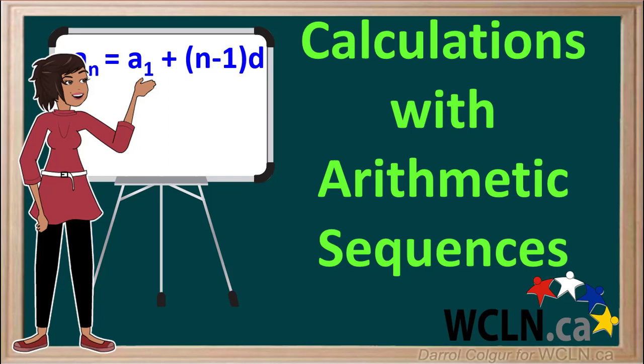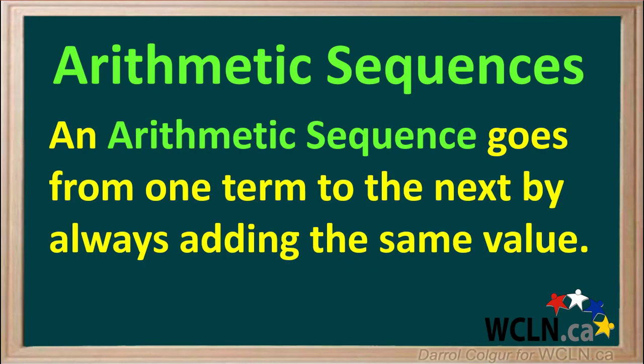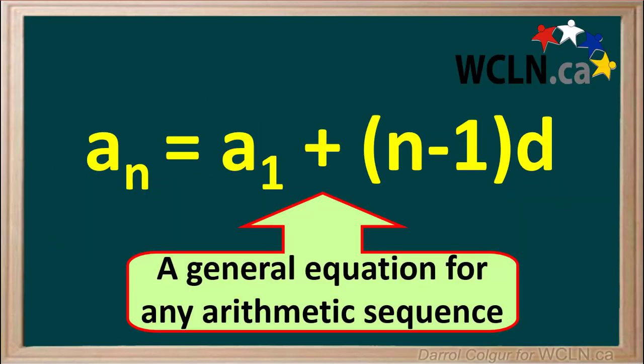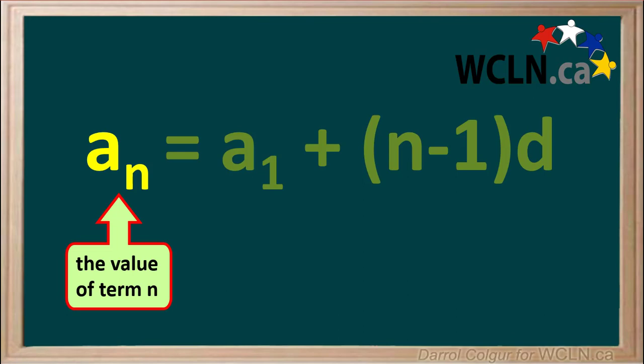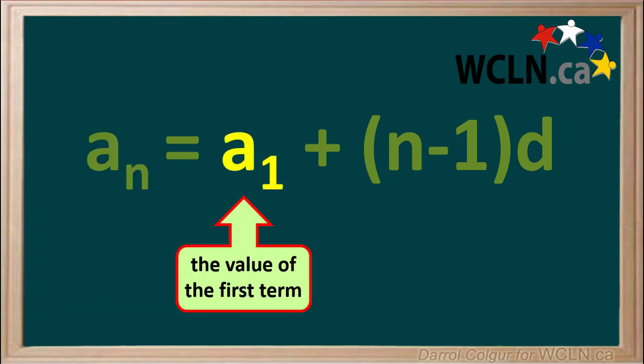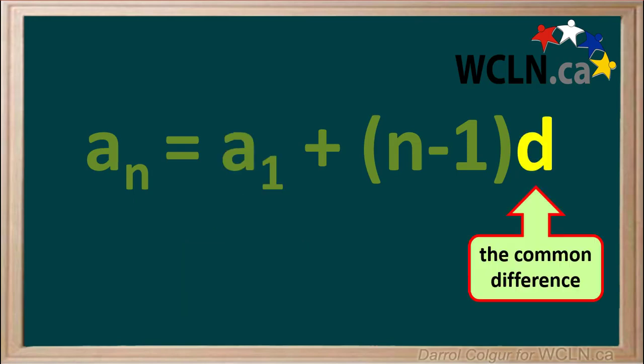We'll look at some arithmetic sequences. Remember, an arithmetic sequence goes from one term to the next by always adding the same value. The general equation for an arithmetic sequence is an equals a1 plus n minus 1 times d, where an is the value for the nth term, a1 is the value for the first term, and d is the common difference — the number we add to each term to get the next term.